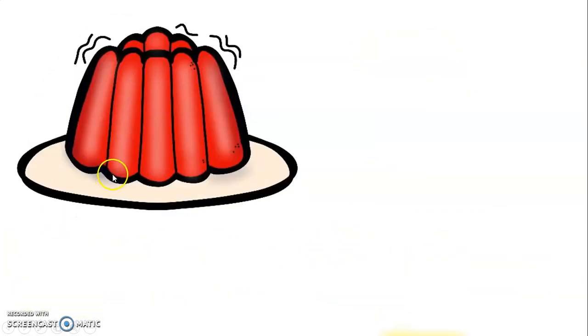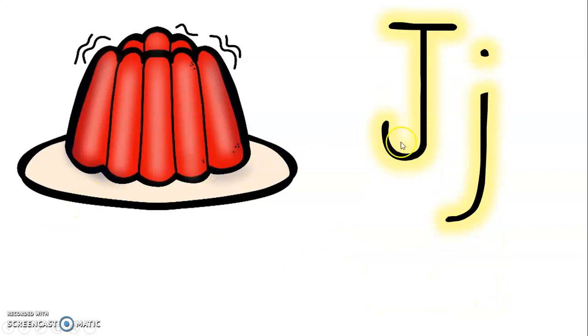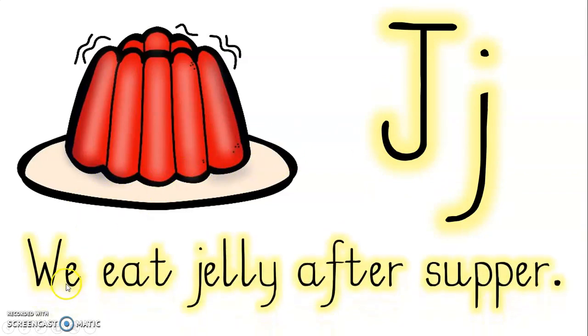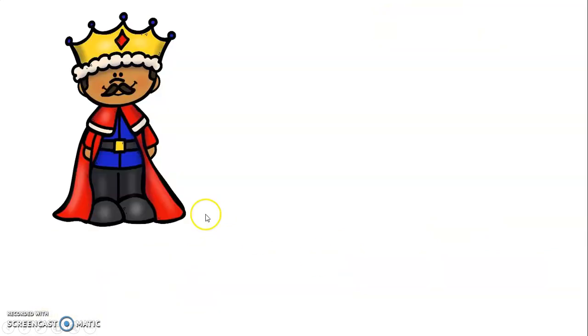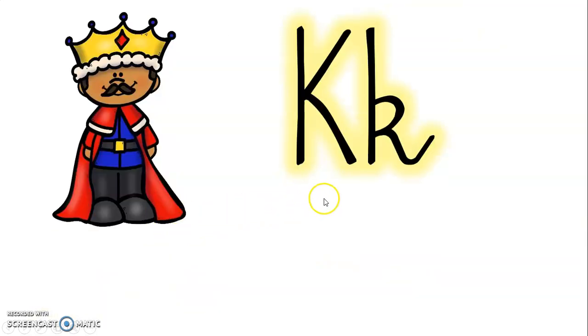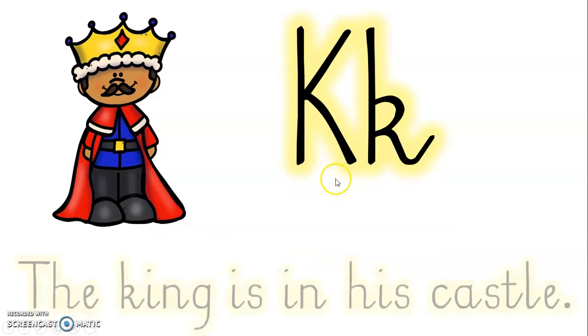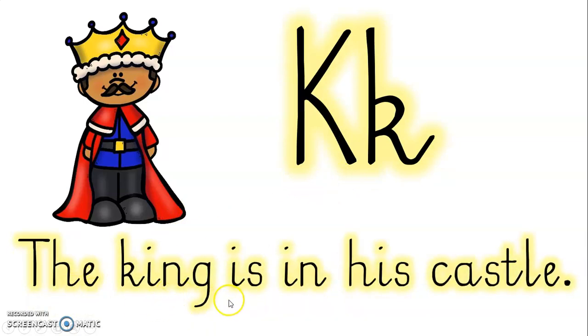Jelly. J-jelly. We eat jelly after supper. King. K-king. The king is in his castle.